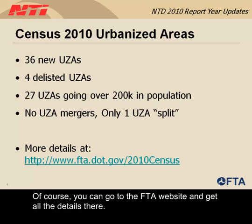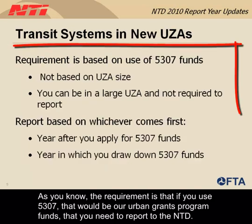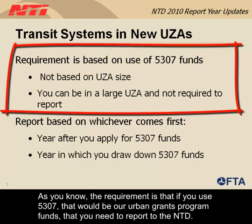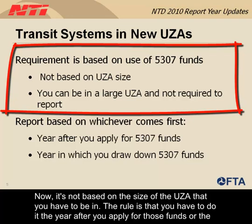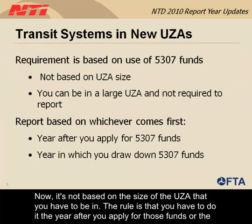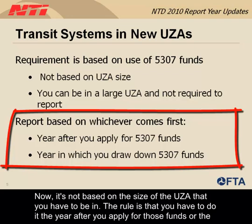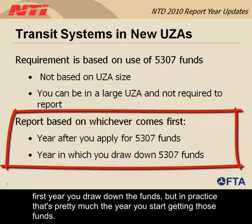You can go to the FTA website to get all the details. The requirement is that if you use 5307 — our urban grants program funds — you need to report to the NTD. It's not based on the size of the UZA you happen to be in. The rule is you have to do it the year after you apply for those funds, or the first year you draw down the funds, but in practice that's pretty much the year you start getting those funds.